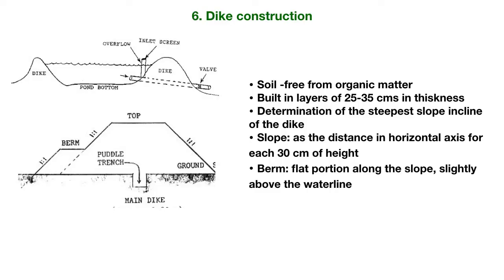A dike is an embankment for controlling or holding back the water of a fish pond. It is the most important part of a pond and should be constructed with great care. The quantity of earth required per hectare for dike construction in a four-hectare pond is estimated to be 2,000 to 4,000 cubic meters. The soil used for dike construction should be free from organic matter, since rotting organic matter will weaken the dike. Humus should be thoroughly cleared from the base to allow proper binding and avoid seepage. The dike should be built in layers of 25 to 35 centimeters in thickness.